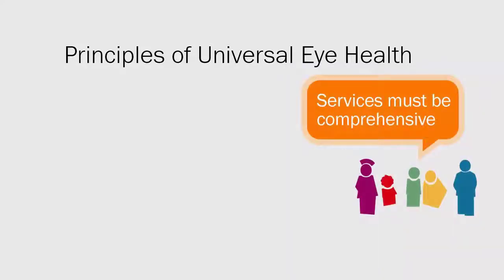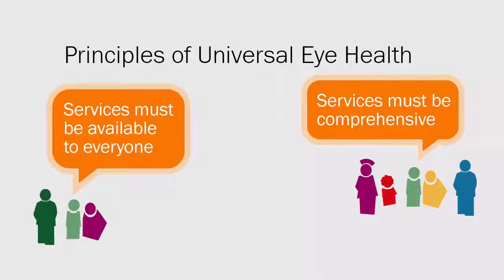Applying the principles of universal eye health means that services need to be made comprehensive for all eye diseases and visual impairments. Services also need to be equitable — available to everyone, whether urban or rural, male or female, young or old, rich or poor, or whether they are isolated or disabled. Varied models of care are needed to achieve this, for example outreach screening and referral, surgical outreach, or telemedicine.